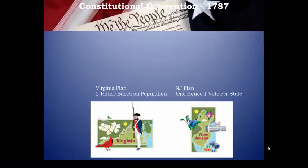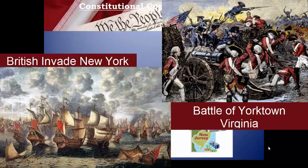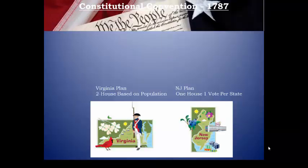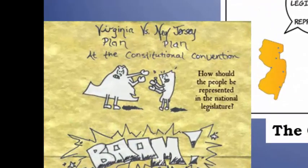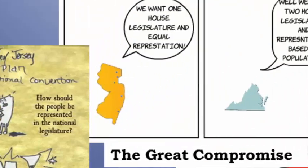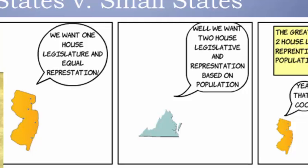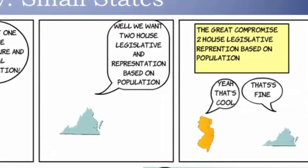Some of the problems at the Constitutional Convention would need a little more compromise. Under the Articles, each state had one vote in Congress, and large states like Virginia and New York, who had to take on a much bigger role during the Revolutionary War both in costs and losses, were not pleased. So two plans for the Congress were being pushed: the Virginia Plan, in which representation in a two-house Congress would be based on population, and the New Jersey Plan, which would have a one-house Congress with equal votes per state — pushed by the small states who were basically happy with Congress as it was under the Articles.